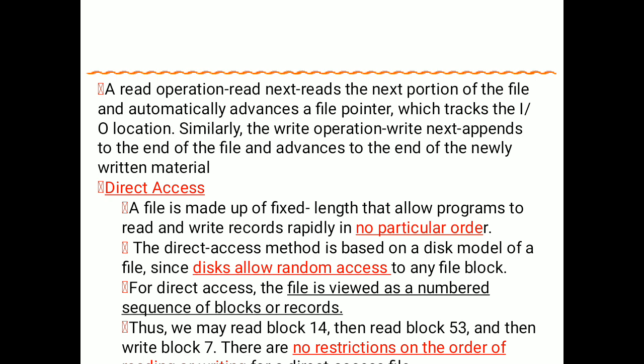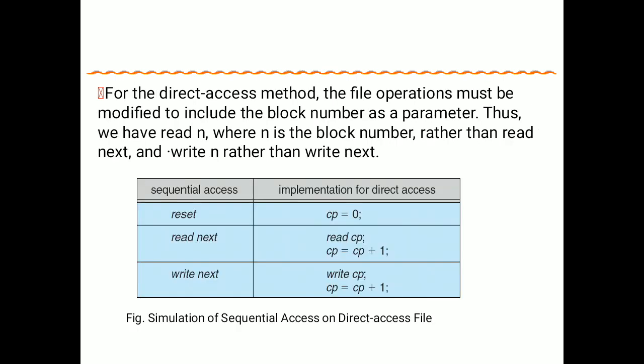The file is stored in random blocks, not in ordered fashion. Direct access method is used because the disk allows random access to any file block. For direct access, the file is viewed as a numbered sequence of blocks or records. Thus we may read block number 14, then block number 53, then block number 7 — there are no restrictions on the order of access. For direct access method, file operations must be modified to include the block number as a parameter.